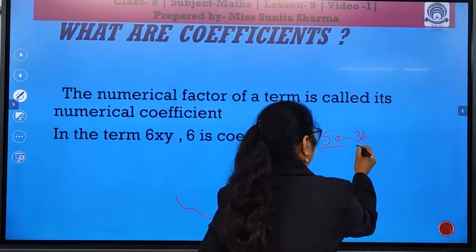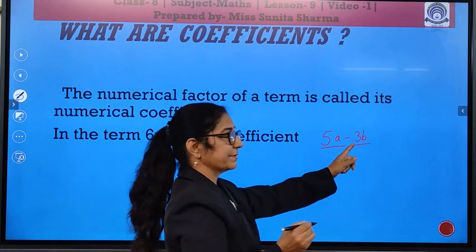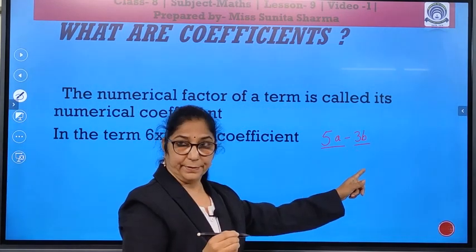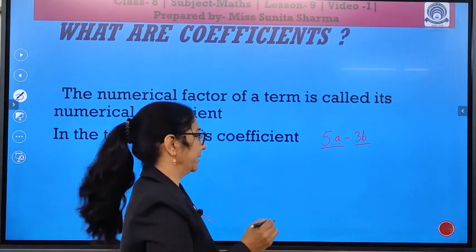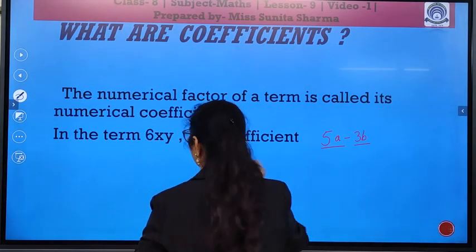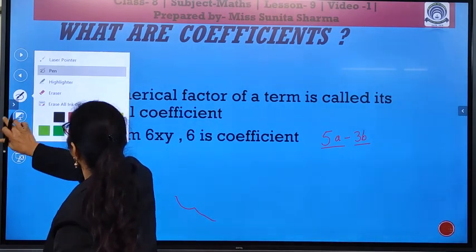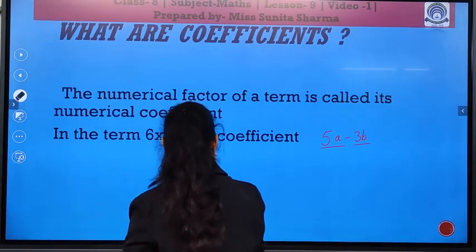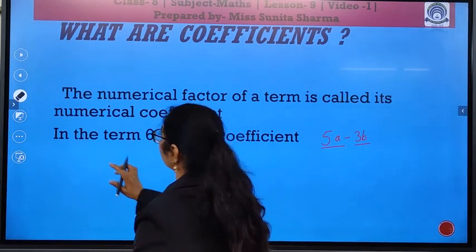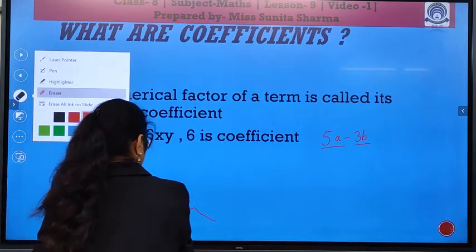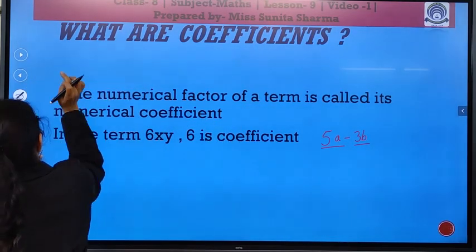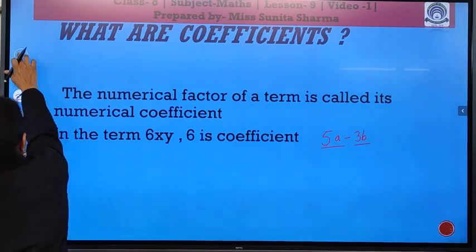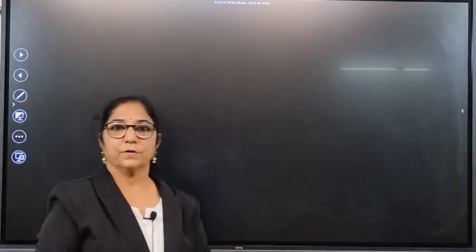So, here, a is a variable and 5 is coefficient. Similarly, here, you see children, 3b. In this, b is a variable and 3 is coefficient. So, minus 3 is a coefficient.